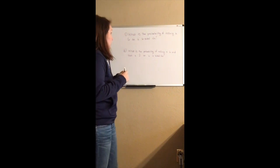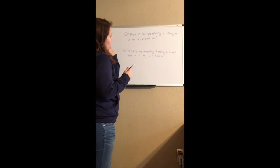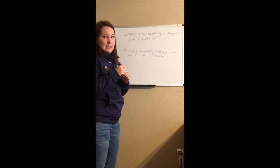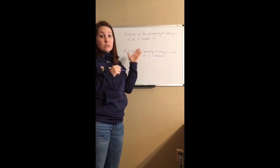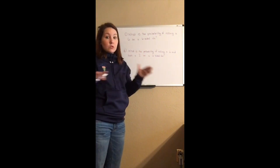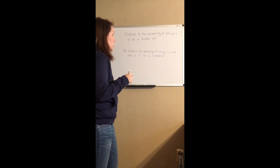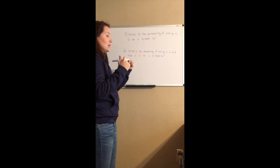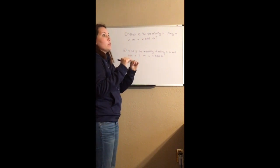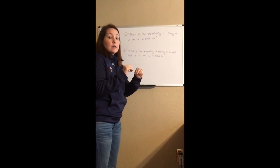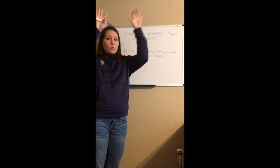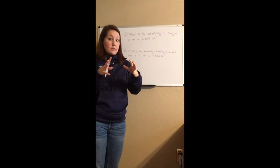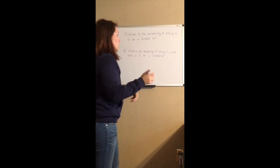We talked about simple versus compound probability, so let's jump right in. What is the probability of rolling a six on a six-sided die? This is a simple, straightforward one-event problem. Remember, simple probability is the number of favorable outcomes over the number of possibilities.